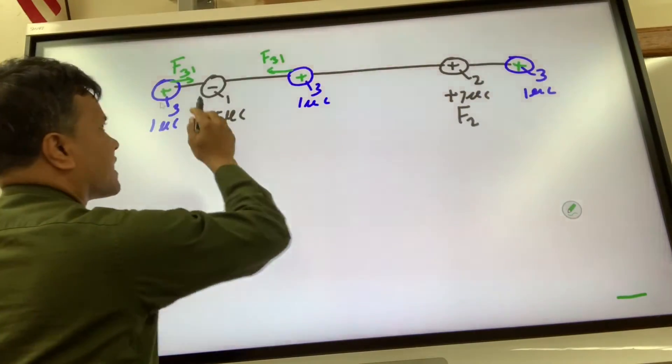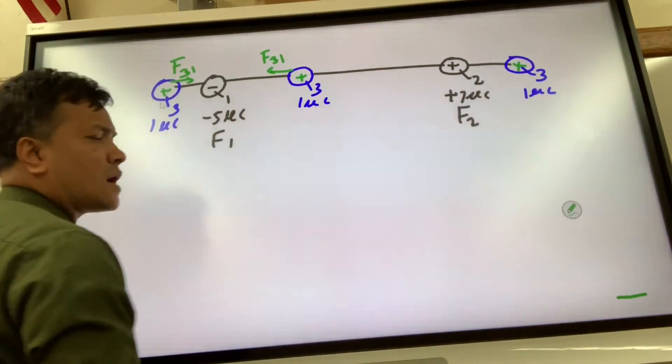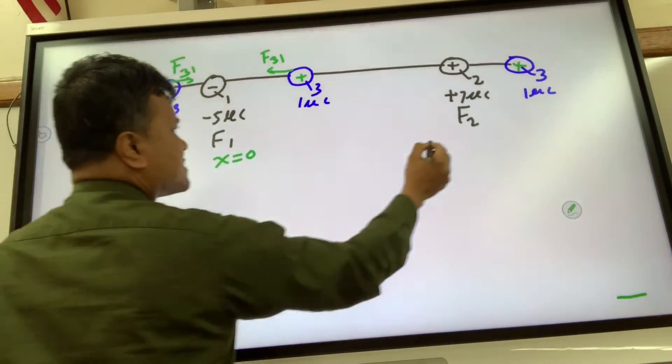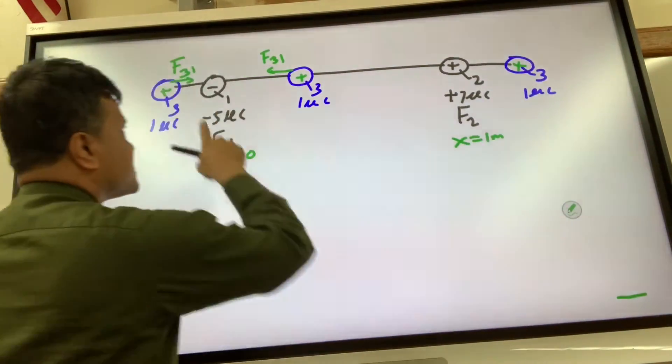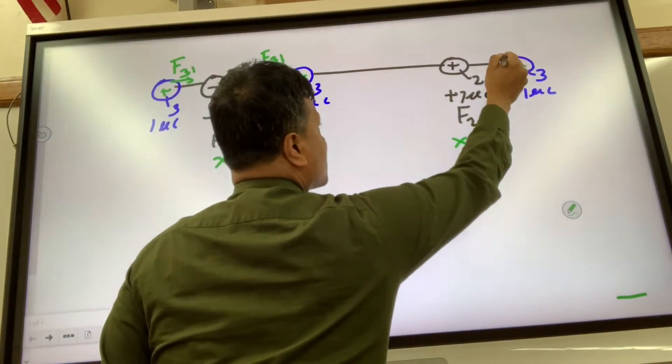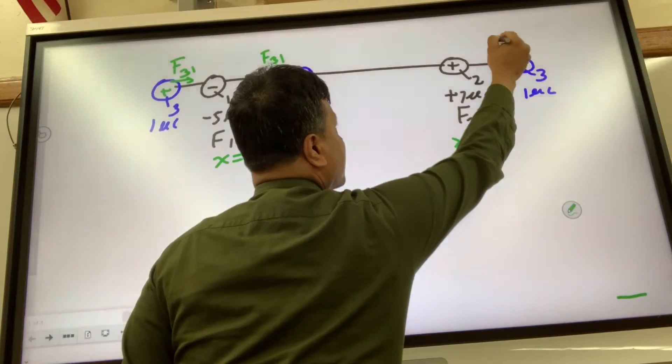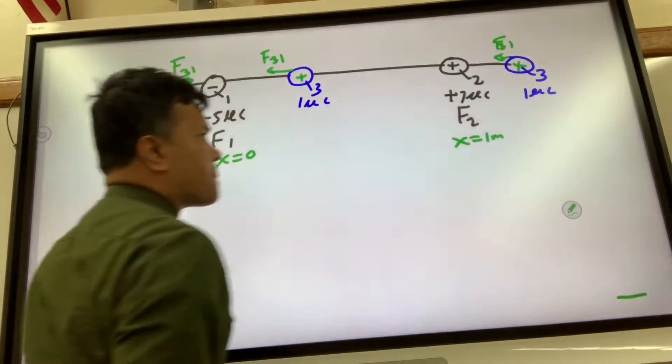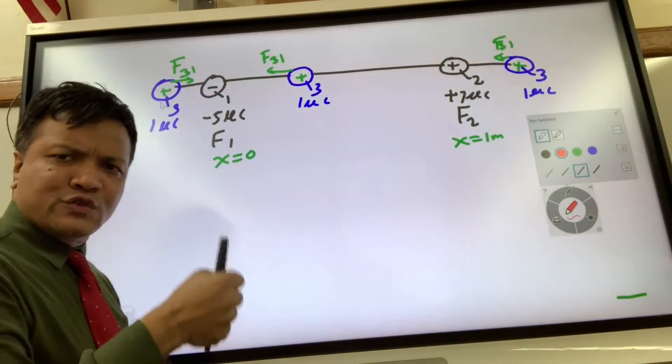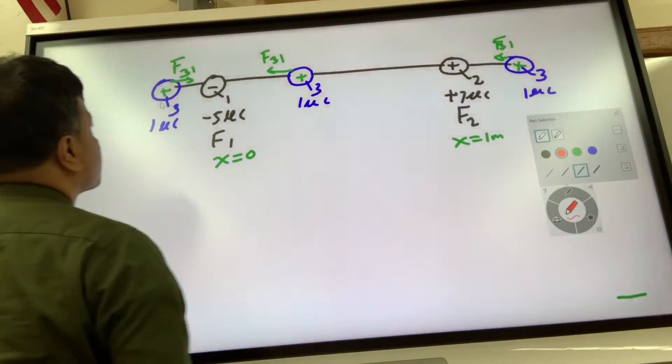However, this is like way far because this is a long distance away. So yeah, there is an attractive force on q3 due to q1. Now we have force on q3 due to q2.